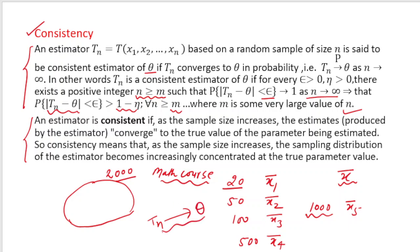That is what the consistent estimator is suggesting: that an estimator will be said to be consistent if your sample size is increasing, then that estimated value with the help of Tn should approach to the actual value equal to theta. It is consistent behavior — the name is taken because of this reason only. If you are increasing your sample size, then certainly the estimated value should become closer and closer to the actual value. If your estimator is not behaving in this way, then certainly it will not be called a consistent estimator.